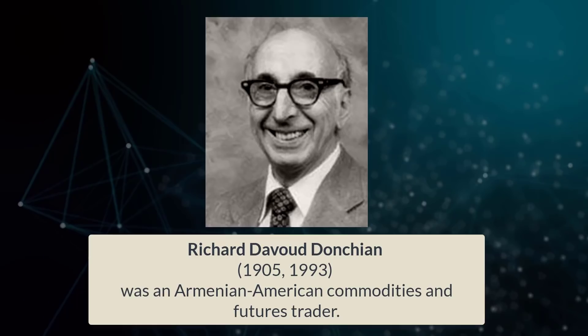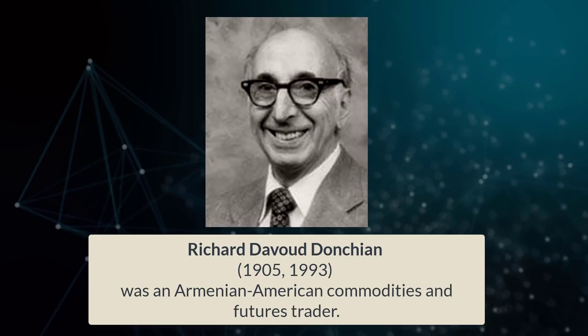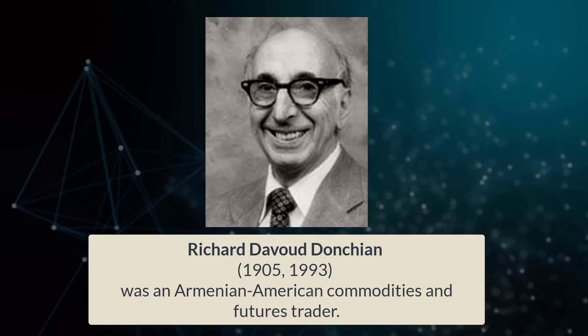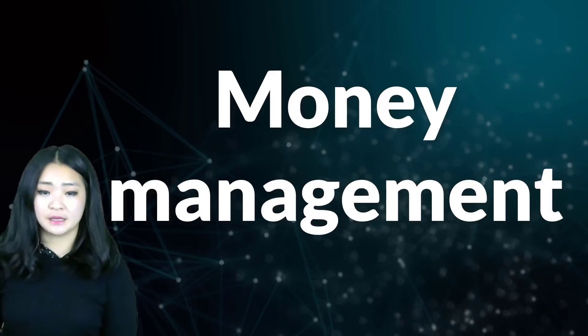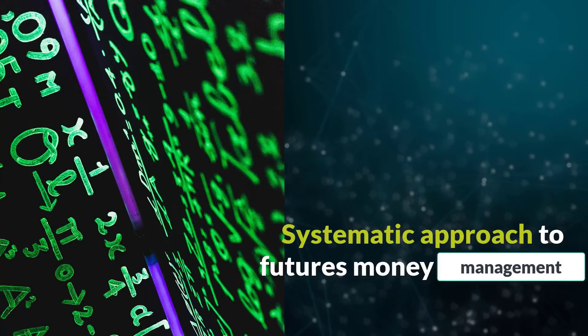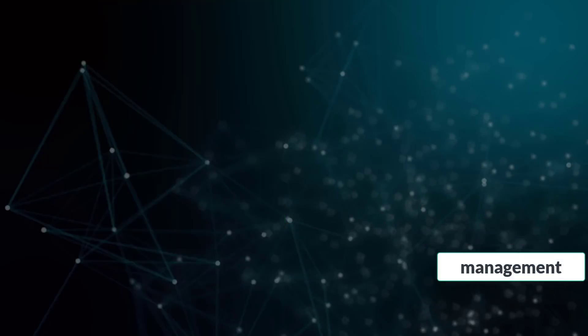So now could you talk to us a little bit more about the history of automated trading systems? Algo trading started way before the internet or modern computing systems were invented. In 1949, Richard Donchian introduced the idea of buying and selling funds with previously created sets of rules. He was the pioneer of the field of managing futures, and the first person to introduce the concept of mutual funds and money management. Most importantly, he developed a systematic approach to futures money management.